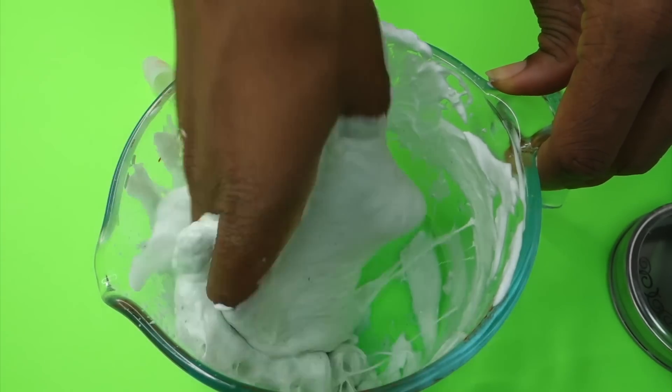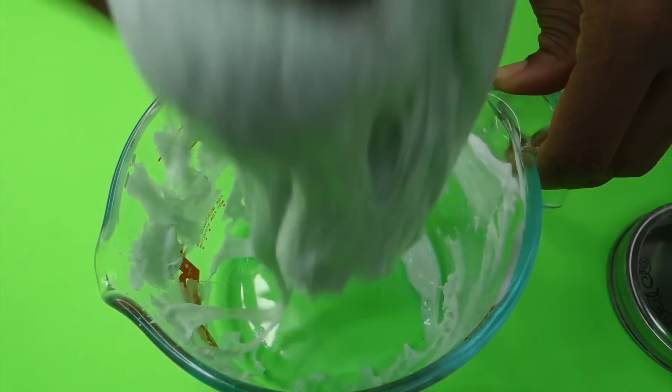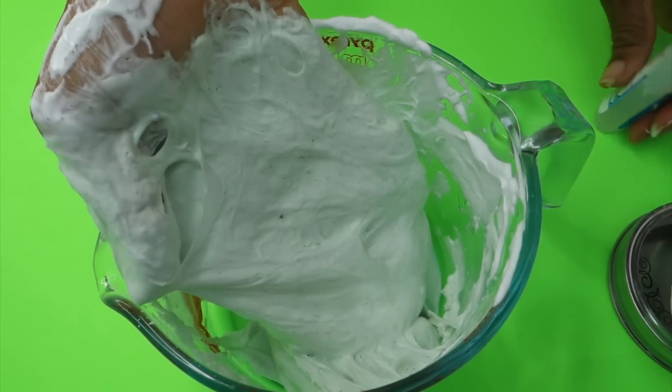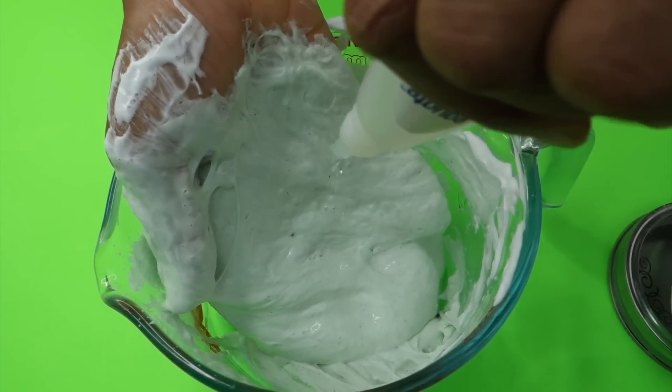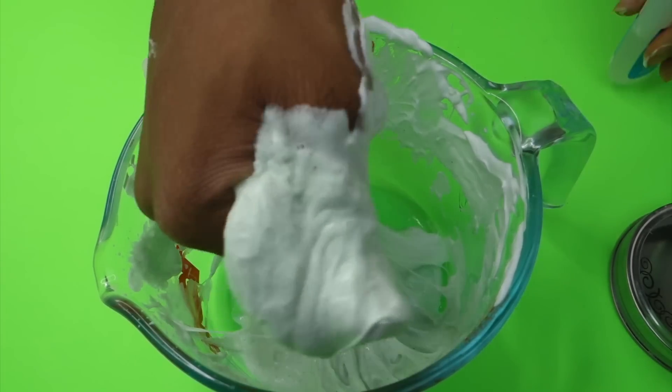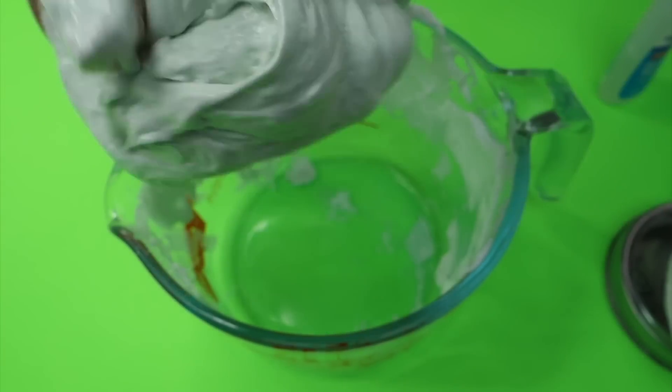So I'm just adding more eye drops as I go. But I didn't want to add too much because just like contact lens solution with eye drops, if you add too much, your slime would get tough. So I'm just adding as much as I need. And I think that is about enough. And then I started mixing it.